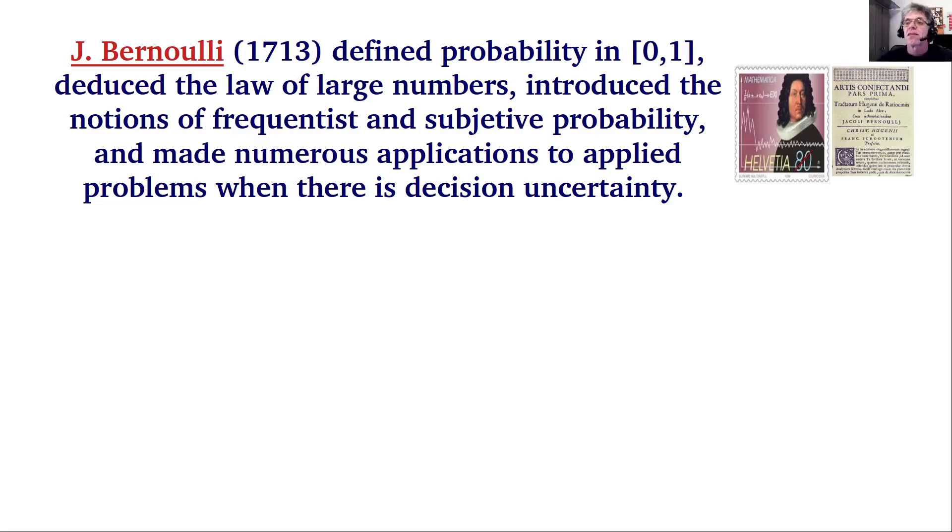The next character in this history is the Swiss mathematician Jacques Bernoulli, who published the foundational book on probability theory, in which he defined probability as a real number in the unit interval. He deduced the law of large numbers related to one of the views of probability. He introduced two notions of probability, one based on frequency, the frequentist view, and one based on subjective probability. Bernoulli made numerous applications to practical problems where the decision is uncertain. He also made the first attempts to estimate probability from empirical observations.